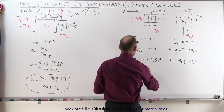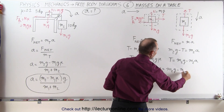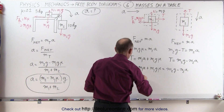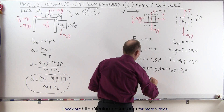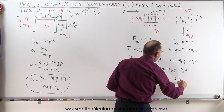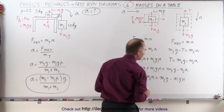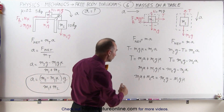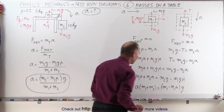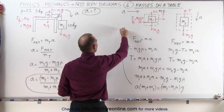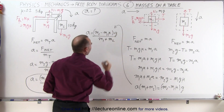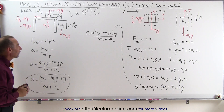Setting the two tension expressions equal to each other, we get m1a plus m1g·mu equals m2g minus m2a. Moving all terms with an a to the left side and everything else to the right, we have m1a plus m2a equals m2g minus m1g·mu. Factoring out a on the left and g on the right, then dividing both sides by the sum of the two masses, we get the same equation for acceleration as before.